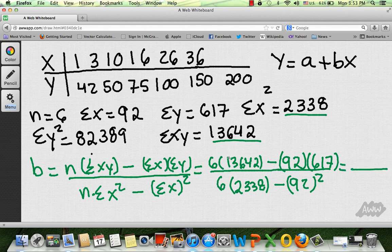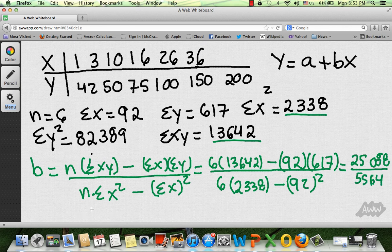The best way is to do the top first, which once you do all that math, hopefully you got 25,088, over the bottom, which is 5,564. Finally, my answer is going to be b equals to 4.51.